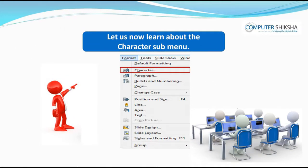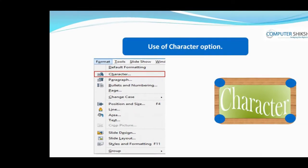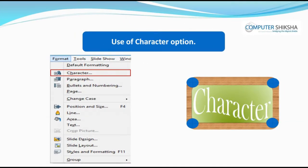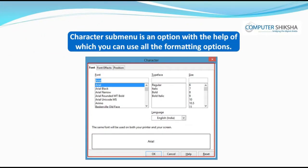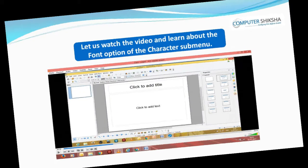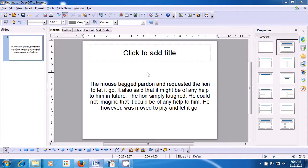Let us now learn about the Character submenu. Can you tell why we use the Character submenu? In the previous class, all of you had made use of the formatting toolbar to format your text or paragraph. Character submenu is an option with the help of which you can use all the formatting options. Let us watch the video and learn about the font option of the Character submenu.